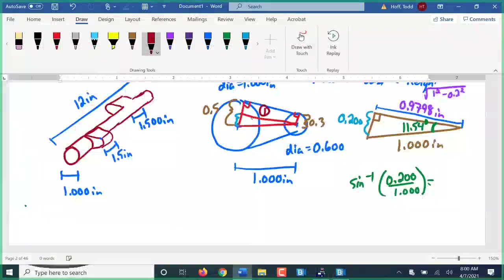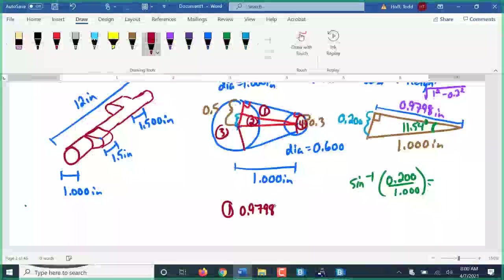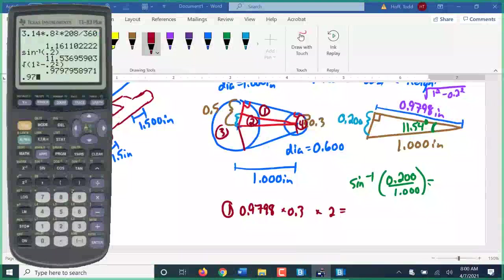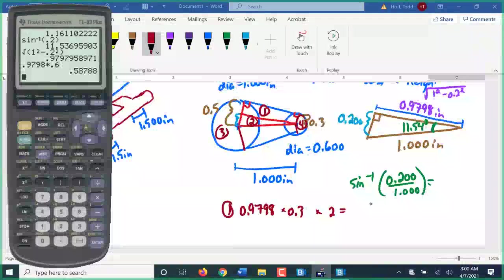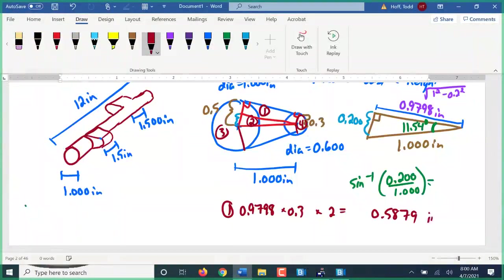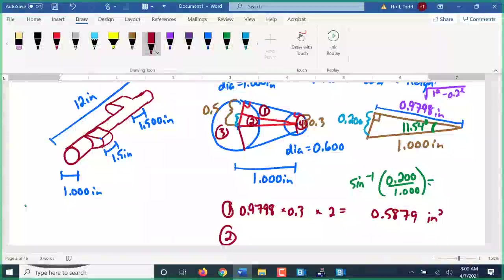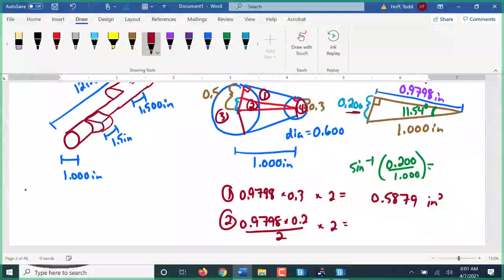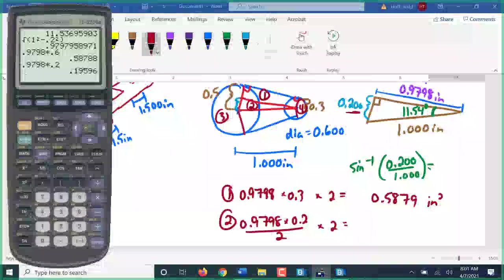So the area here, when I have the rectangle, I'm going to have two of them. I have the triangle, I'm going to have two of those, and then I have the two sectors of the circles. Area 1 is going to be 0.9798 times 0.3, and then, of course, times 2 because there's two of them. That's 0.5879. Piece 2 is that triangle, which will be 0.9798 times 0.2 divided by 2 because it's a triangle, then times 2 because there's two of them. That's 0.1960.